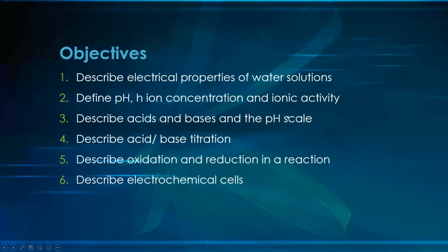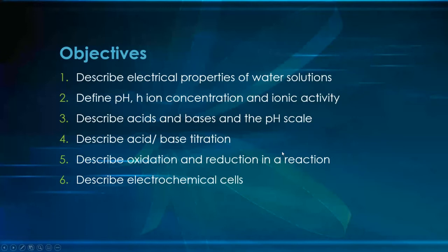We'll be defining pH, hydrogen ion concentration, and ionic activity — acids and bases on the pH scale — all stuff we've looked at before. Acid-base titration is a small component in this ILM. We'll describe oxidation and reduction in a reaction, building on oxidation numbers discussed earlier and how they work out in a chemical reaction. The last objective is describing electrochemical cells, which provides the chemistry background for the sensors we discuss in liquid analyzers.